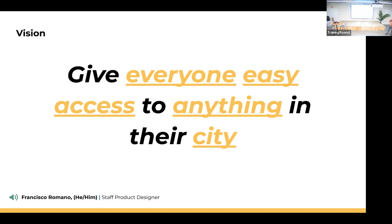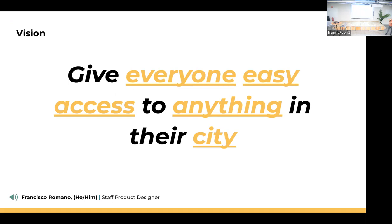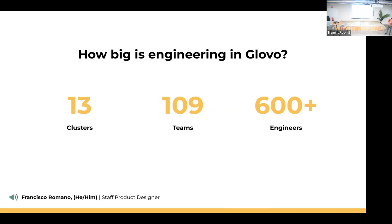A little about Global: the vision is to give everyone access to anything in their city. We're in 25 countries, more than 1,500 cities, and 130K monthly active partners — restaurants and all that. To do that, we have 13 clusters, 109 teams reported in those clusters.